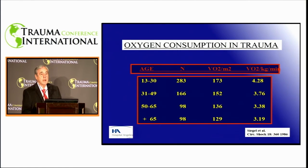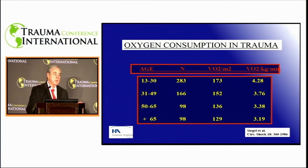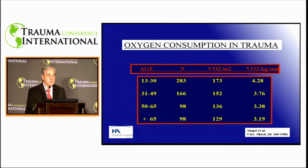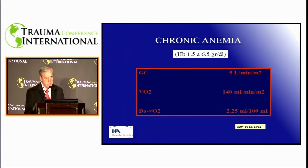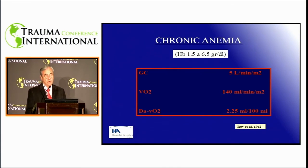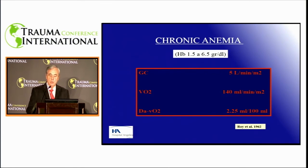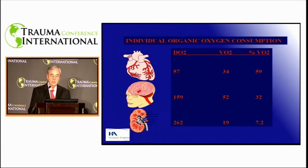Another factor to consider is that age changes oxygen consumption: the older you are, the less oxygen you consume, and you are supposed to eat less and work less as you age. We must always have these values in mind. Looking at chronic anemia—published in 1962 by Roy et al.—it is possible to keep a person alive when they develop adaptation to chronic anemia, and each organ has availability, consumption, and extraction that are different.